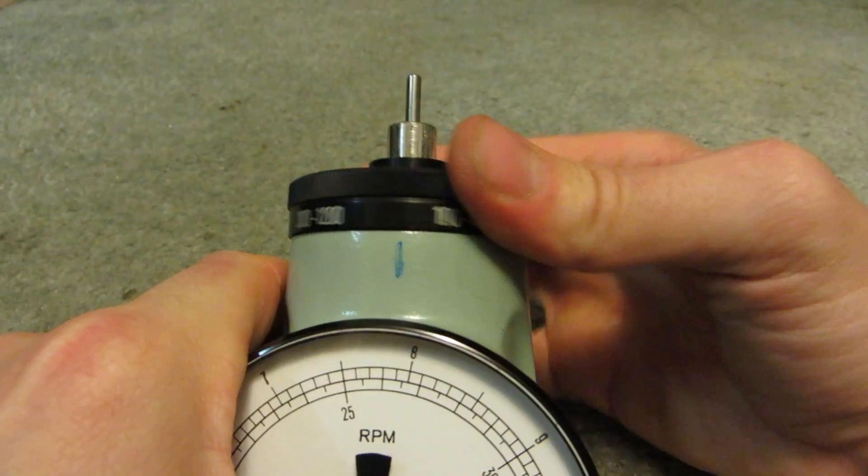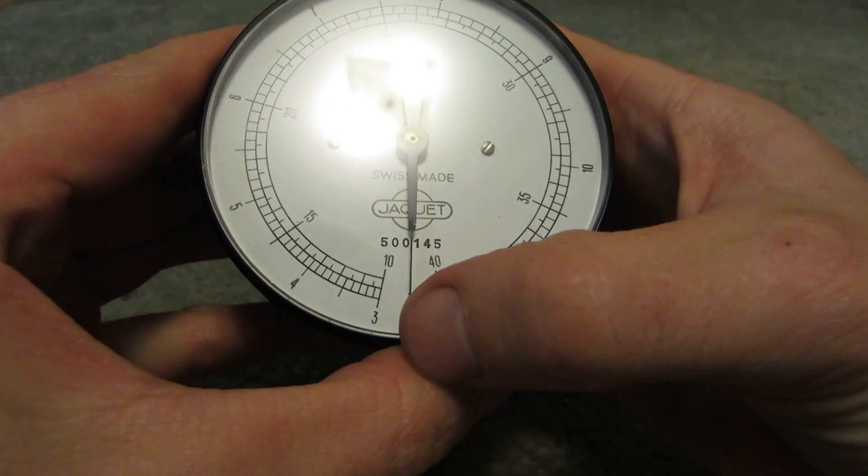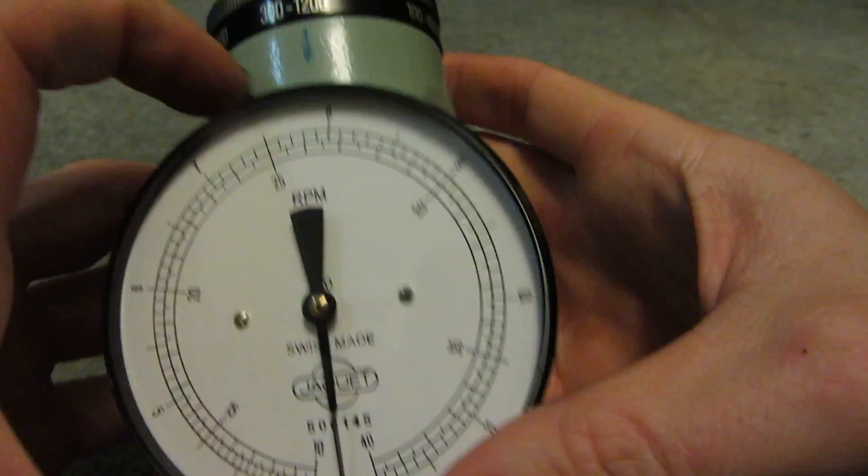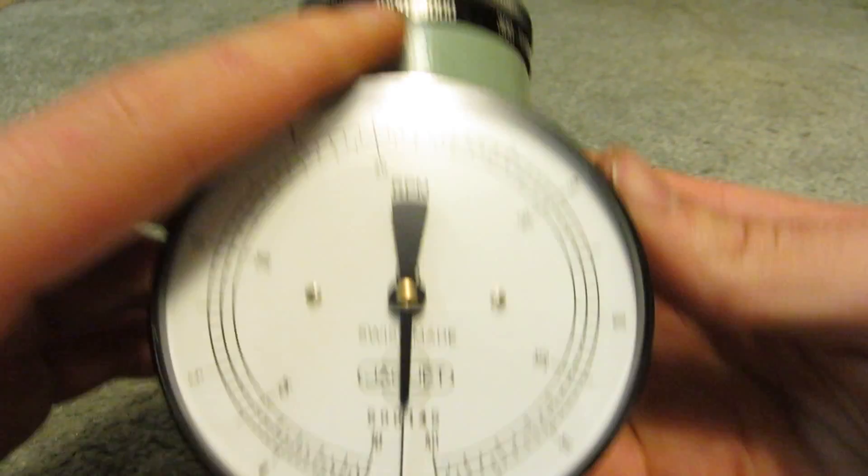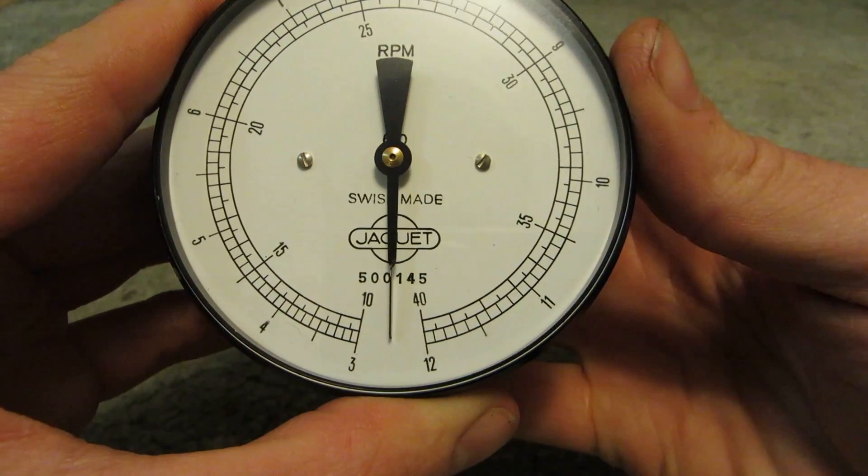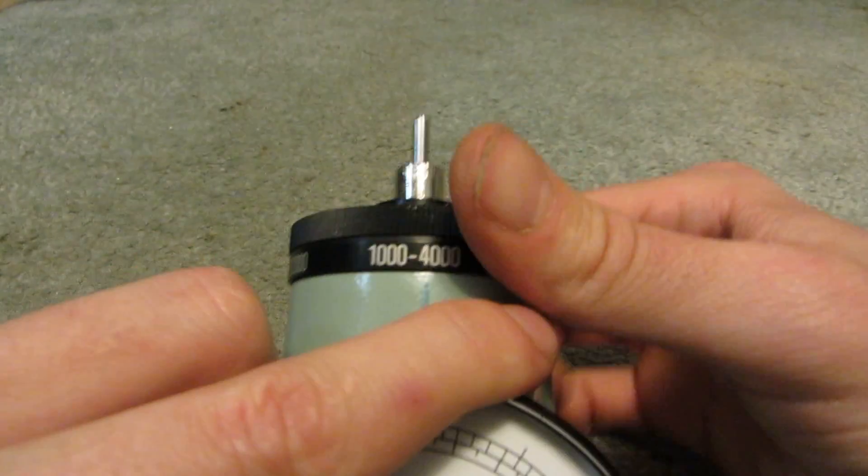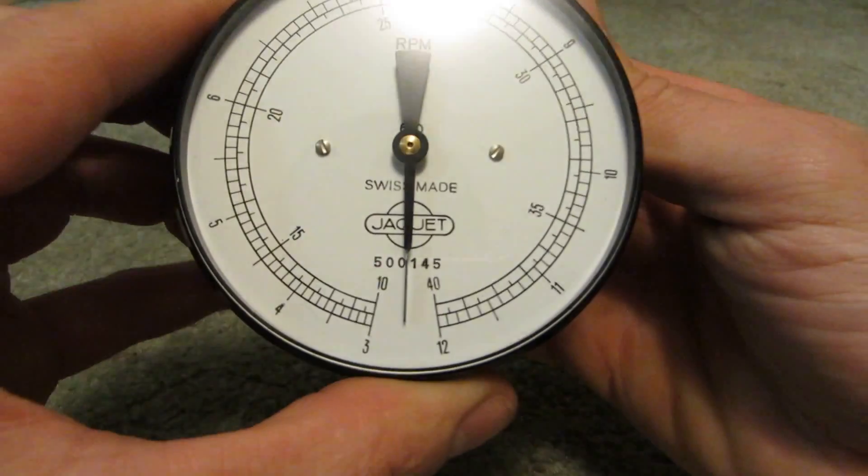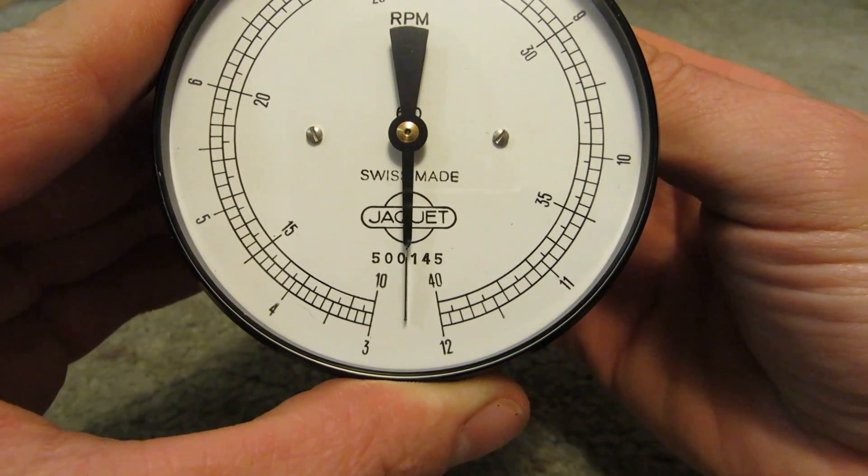And again for the next one up. So now you're back to the outside number just adding an extra zero, so 300 and that would be ending at 1,200. And then you're back to the inside adding another zero. 1,000 to 4,000. And finally, you're back to the outside numbers adding two more zeros. 3,000 to 12,000.